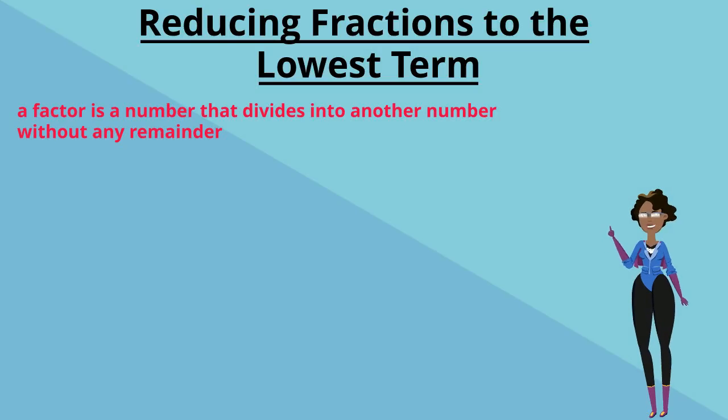So for example, the factors of 20 would be 2, 4, 5 and 10. All of these numbers when divided into 20 leaves no remainders.